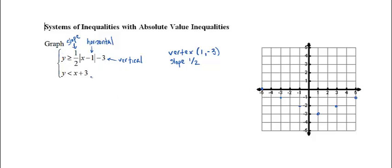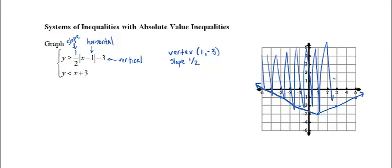Okay, this is a greater than or equal to, since it's an or equal to, I have a solid line. So my V is solid. And then since it's greater than, I'm shading everything up above that absolute value.